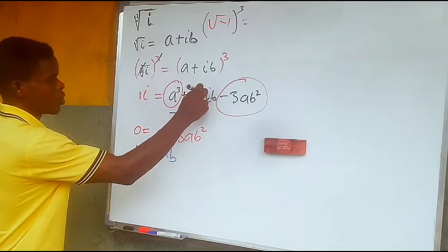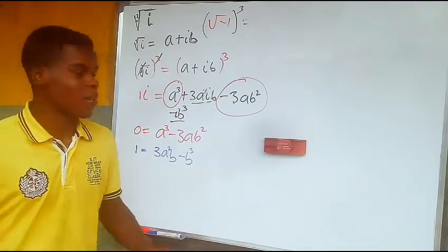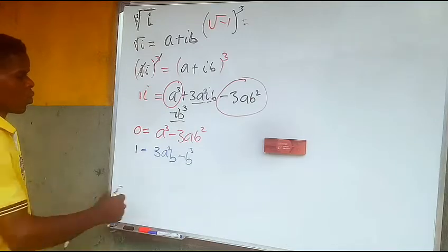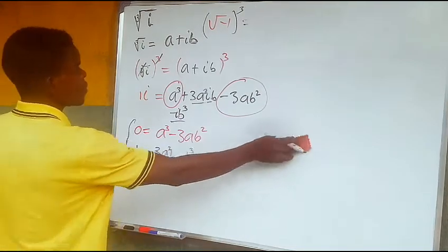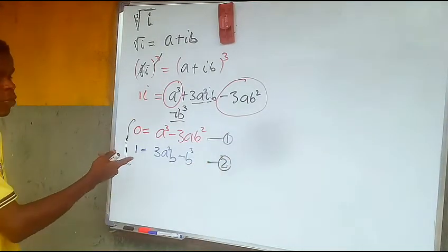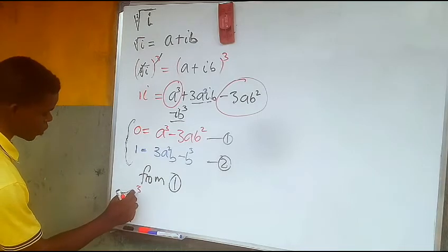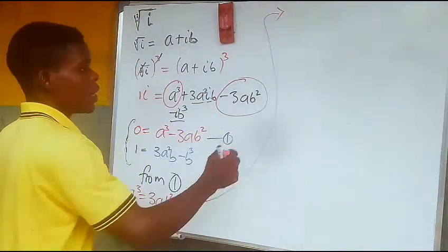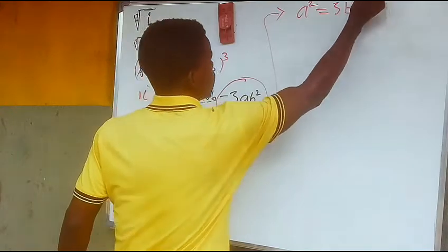The imaginary part gives us one equals three a squared b minus b cubed. Note that in the binomial expansion, the powers of a decrease while the powers of b increase. We call these two equations a simultaneous set of equations — equation one and equation two. From equation one, a cubed equals three a·b squared, and canceling a from both sides gives a squared equals three b squared. Let's call that equation three.